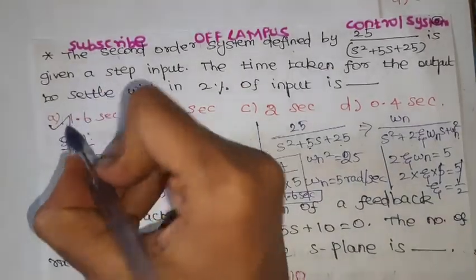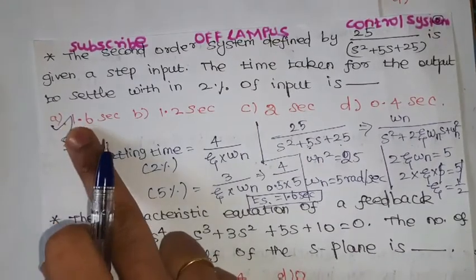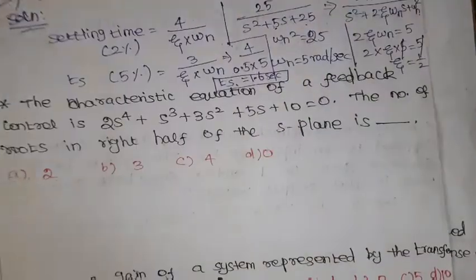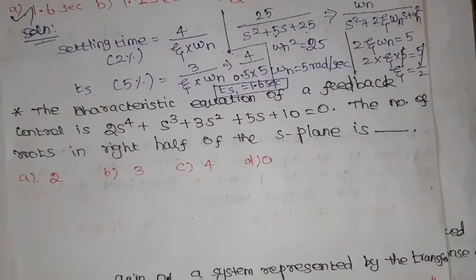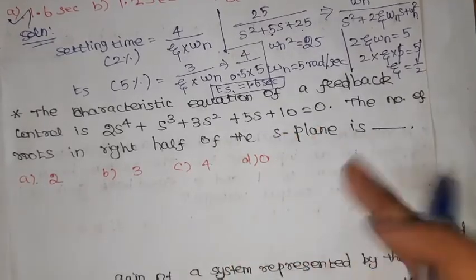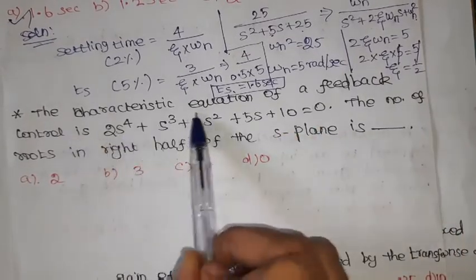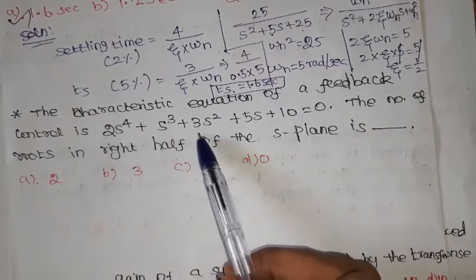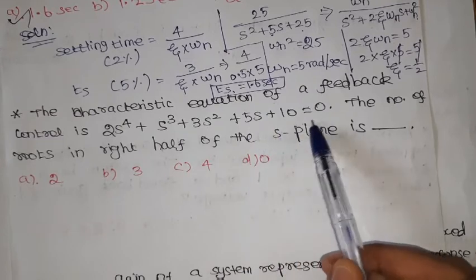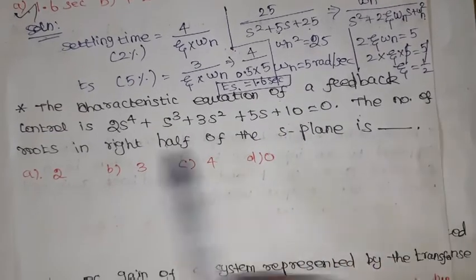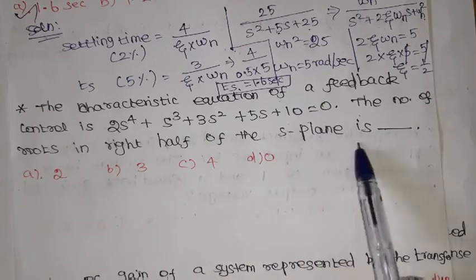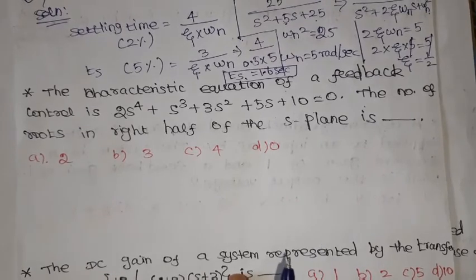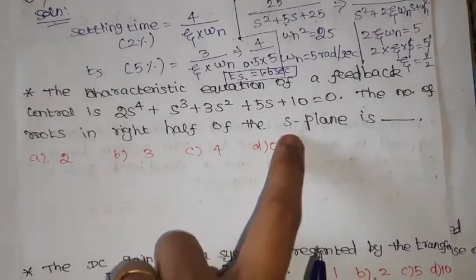The settling time within 2% of the input is 1.6 seconds — that is option A, the correct answer for this problem. Moving to the next problem, which is based on the Routh-Hurwitz criterion: the characteristic equation of a feedback control system is 2s⁴ + s³ + 3s² + 5s + 10 = 0. We need to find the number of roots in the right half of the s-plane, with 4 options given.